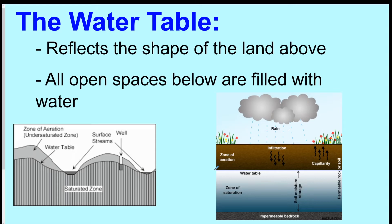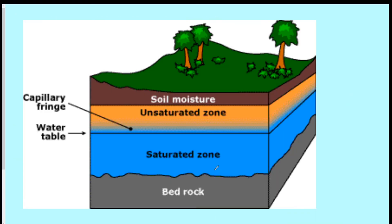Summary: the water table reflects the shape of the land, and all open spaces in the saturated zone are filled with water. The impermeable rock at the bottom has no water — it's solid with no pores for water to fill. The saturated zone has all the water, and the unsaturated zone has no water.